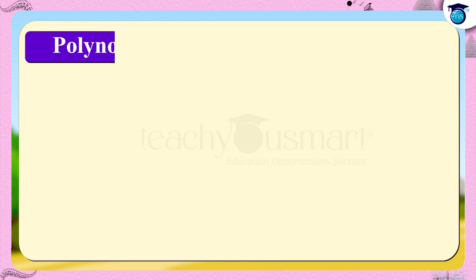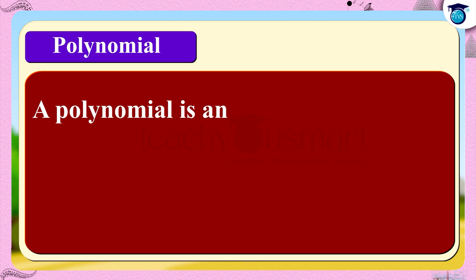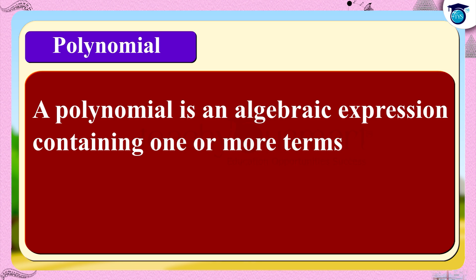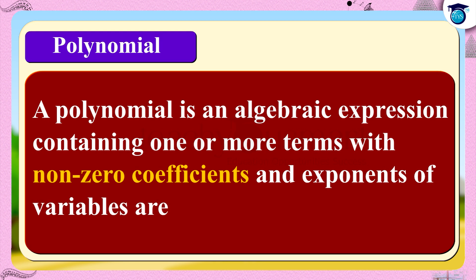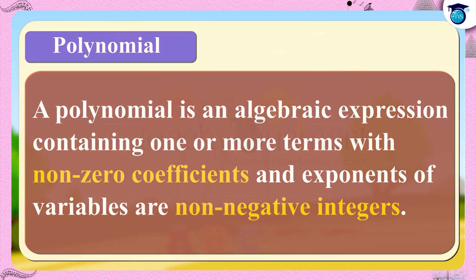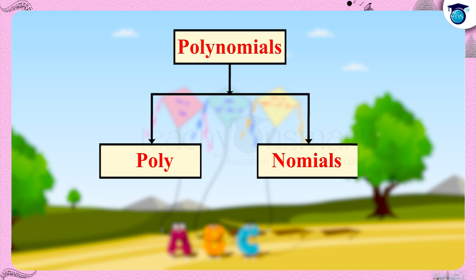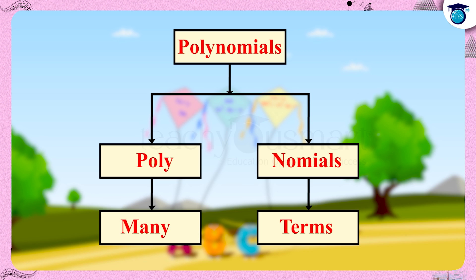Now let us see what is a polynomial. The examples we discussed above are polynomials. A polynomial is an algebraic expression containing one or more terms with non-zero coefficients, and exponents of variables are non-negative integers. The word polynomial is formed by two words: poly and nomials. Poly means many; nomials means terms. That is, polynomial means many terms.